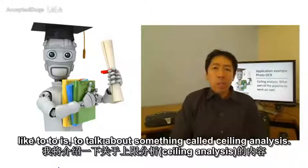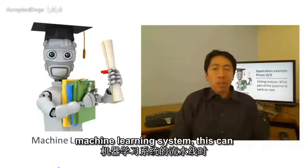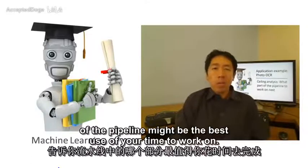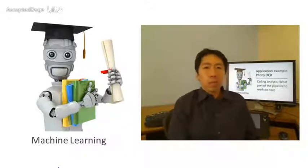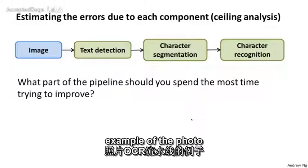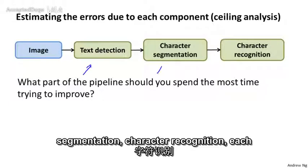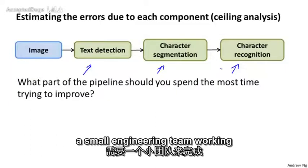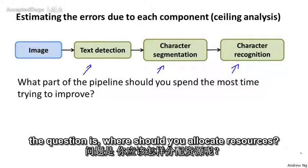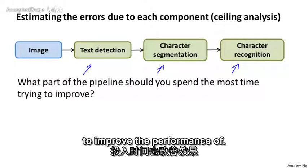In this video, I'd like to talk about something called ceiling analysis. When you have a team working on a pipeline machine learning system, this can give you a very strong signal — very strong guidance — on what parts of the pipeline might be the best use of your time. Each of these boxes — text detection, character segmentation, character recognition — can have even a small engineering team working on it. The question is: where should you allocate resources? Which of these boxes is most worth your effort trying to improve?